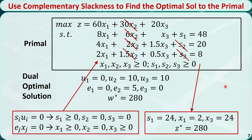This is how we use complementary slackness to find the optimal solution to the primal if we know the optimal solution to the dual. Of course, you can also do it the other way around — use complementary slackness to find the optimal solution to the dual if we know the optimal solution to the primal. I leave that to you as an exercise. Thanks for watching.